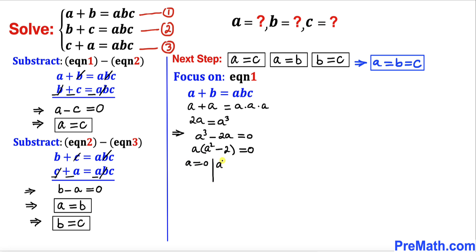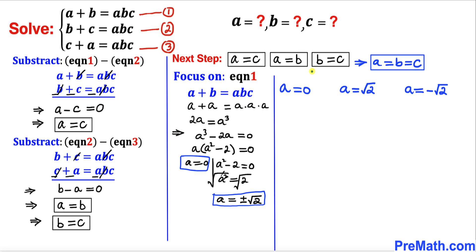Separating the factors: a equals zero, or a squared minus 2 equals zero. From the second factor, moving negative 2 to the other side gives a squared equals 2. Taking the square root of both sides, a equals positive or negative square root of two. So our three values are a equals zero, a equals positive square root of two, and a equals negative square root of two.